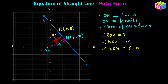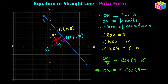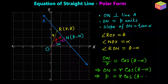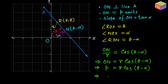Now looking at the right triangle RON, we can say that ON over r equals cosine of theta minus alpha. From here, ON equals r times cosine of theta minus alpha. Since ON is nothing but lowercase p — the distance of the straight line from the origin — we get p equals r times cosine of theta minus alpha, or equivalently, r times cosine of theta minus alpha equals p. That is the desired equation of the straight line in polar form.